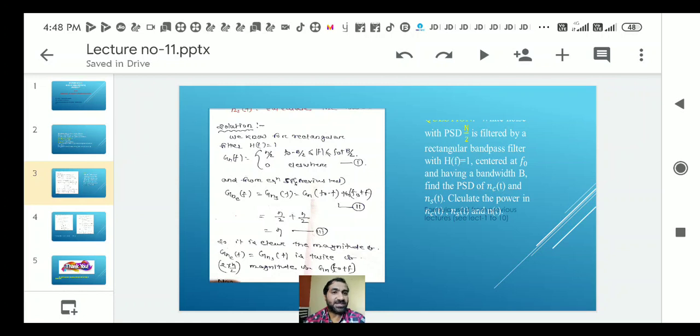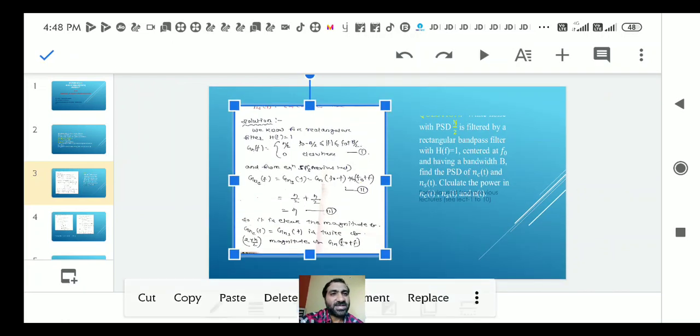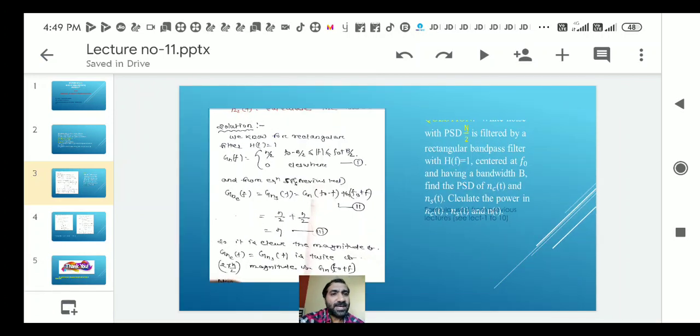Here is the solution. We know h(f) equals 1, that means rectangular filter. The formula for the rectangular filter is eta by 2 from f naught minus b by 2 to f naught plus b by 2, where b is the bandwidth.